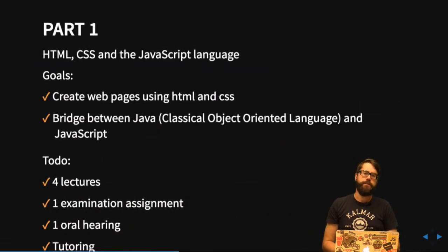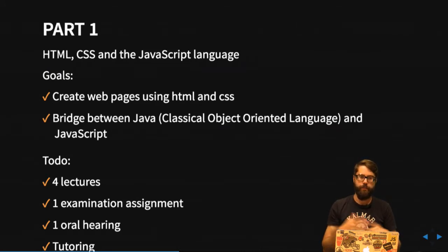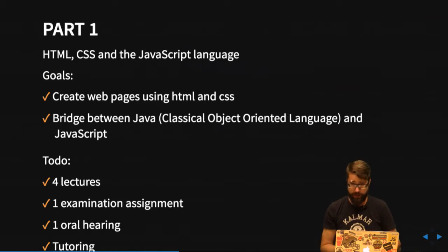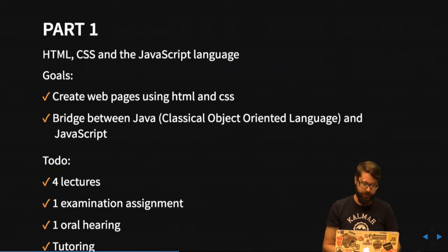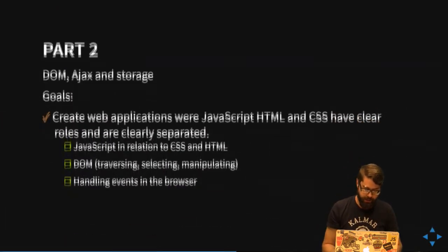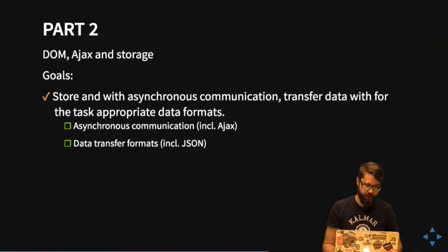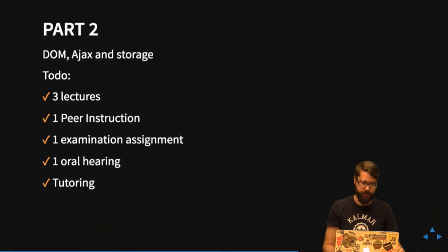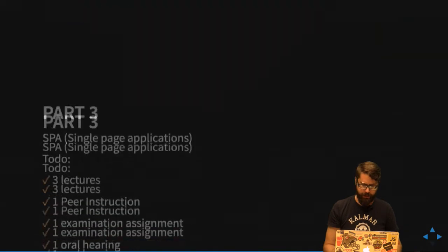To recap the parts: part one — HTML, CSS, and JavaScript language — covers four lectures, one examination assignment, and one oral hearing. Part two — DOM and storage — covers web browser internal components, security models, and browser APIs, with three lectures, one peer instruction, one assignment, and one oral hearing. Part three follows the same structure. I won't go into all details right now.